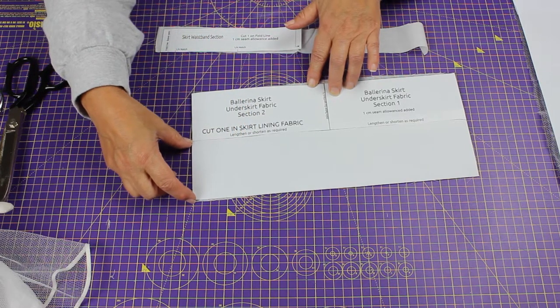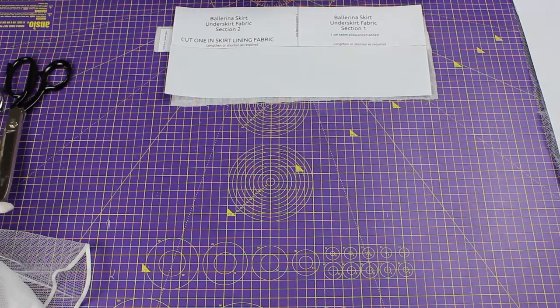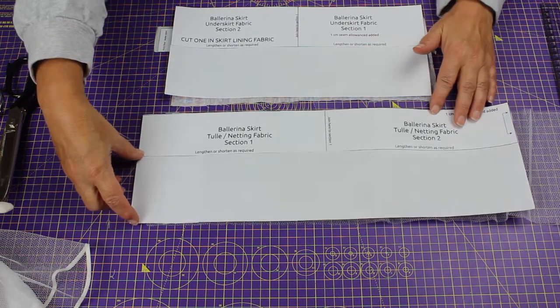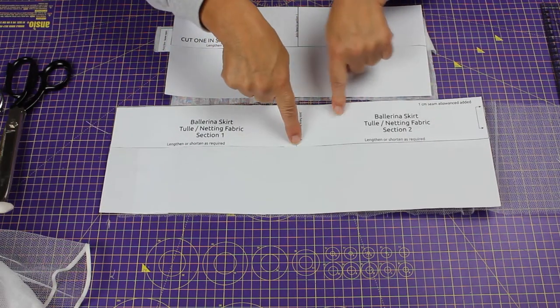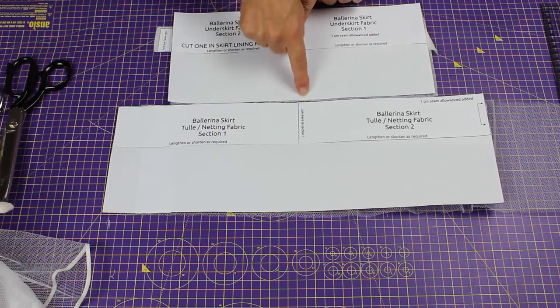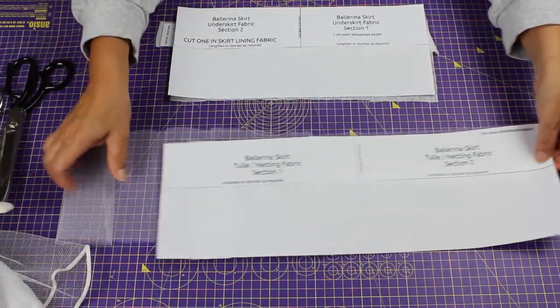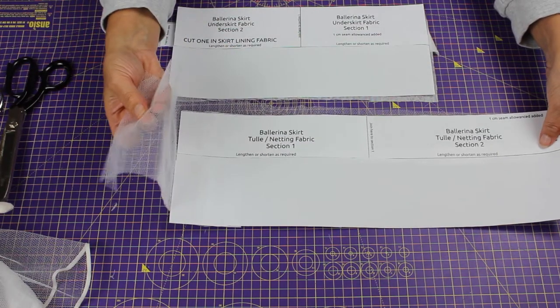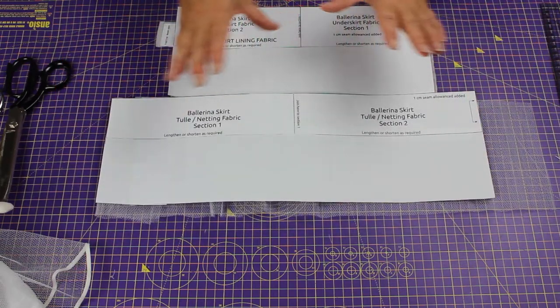I've also lengthened the netting section by the same amount as I lengthened the skirt section. I cut that on a fold, but because my net was wider, I just decided to leave the extra. It'll be a fuller underskirt. These are just rectangles, so you can adjust them as you see fit.